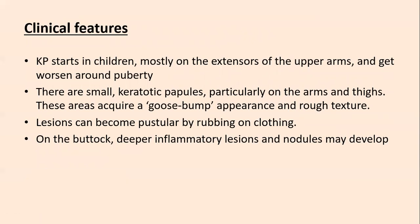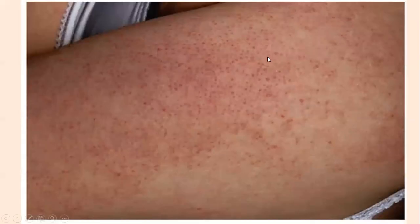There are small keratotic papules, particularly on the arms and thighs, giving a goose-bump appearance and rough texture. Lesions can become pustular from friction with clothing. On the buttocks, deeper inflammatory lesions and nodules may develop. This is how the follicular plugging of keratosis pilaris looks — giving a goose-bump appearance.